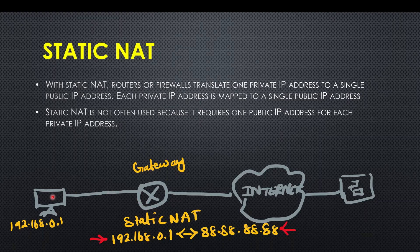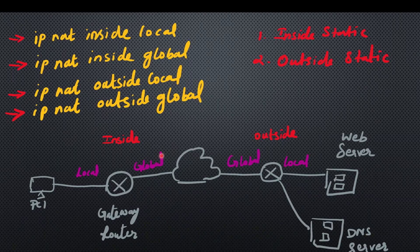We will go through private to public translation and public to private translation. In Cisco, there are two types: inside static and outside static. The terms are IP NAT INSIDE LOCAL and INSIDE GLOBAL.